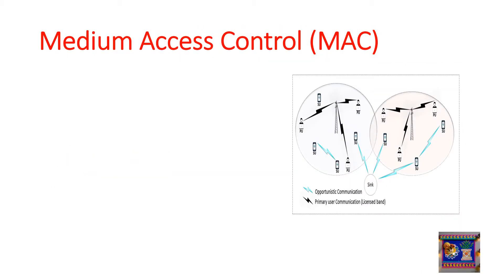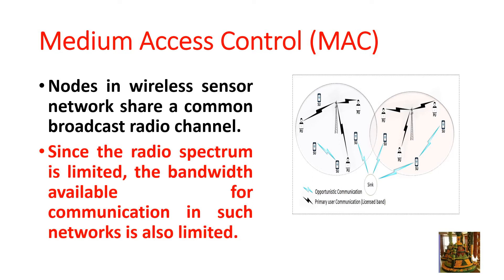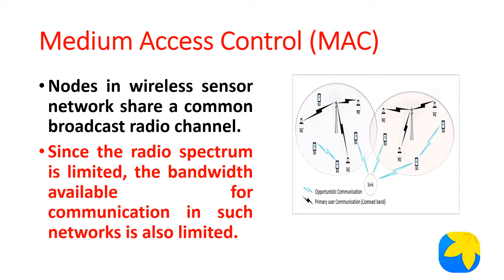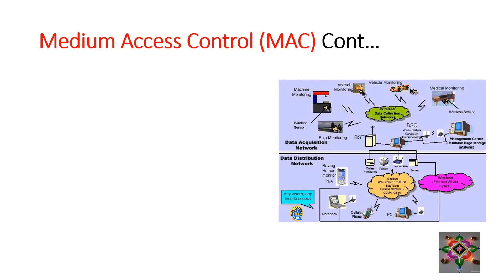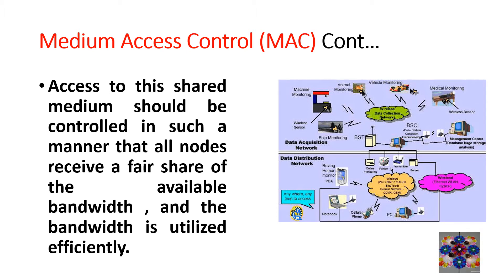Medium access control MAC: nodes in wireless sensor networks share a common broadcast radio channel. Since the radio spectrum is limited, the bandwidth available for communication in sensor networks is also limited. Access to this shared medium should be controlled so that all nodes receive a fair share of the available bandwidth and the bandwidth is utilized efficiently.